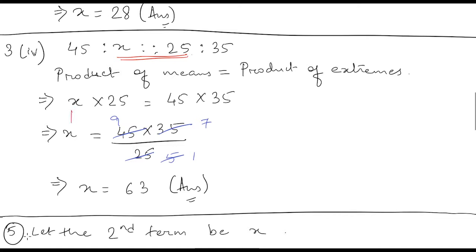X into 25 is equal to 45 into 35. Again we will keep X here and take 25 to the other side, so we have X is equal to 45 into 35 divided by 25. And if you solve this, you will get X equals to 63.